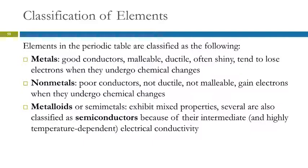We classify the elements as metals, non-metals, or metalloids. Metals are good conductors. They conduct heat and electricity. Probably the most important property for chemistry is they tend to lose electrons in chemical changes.